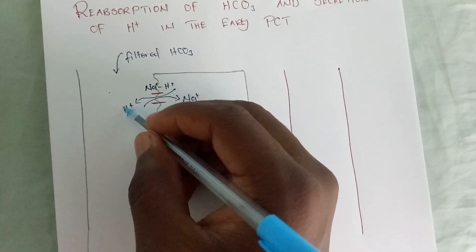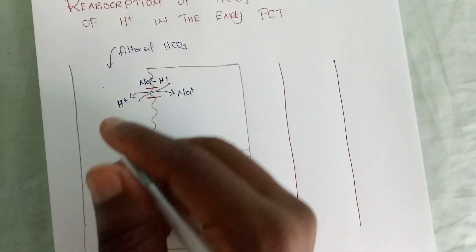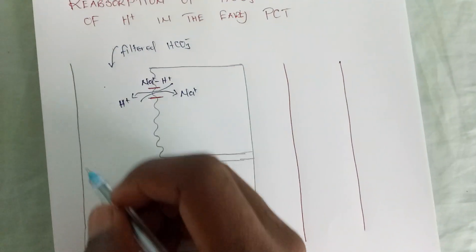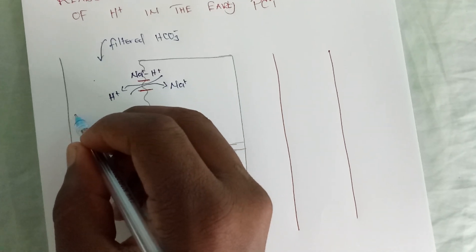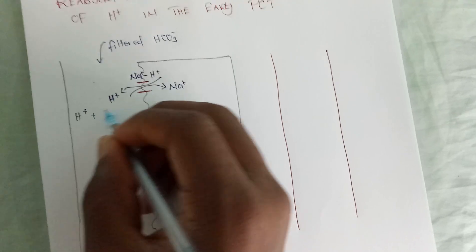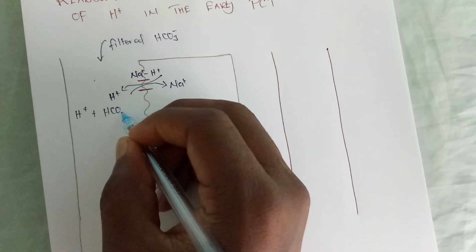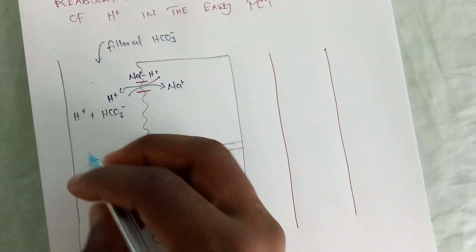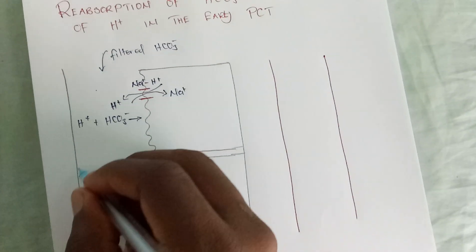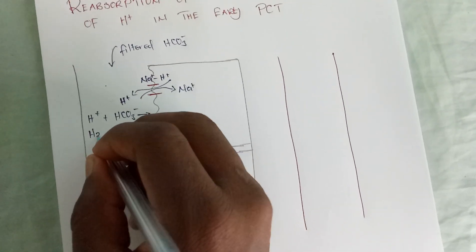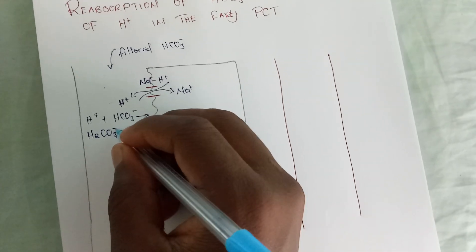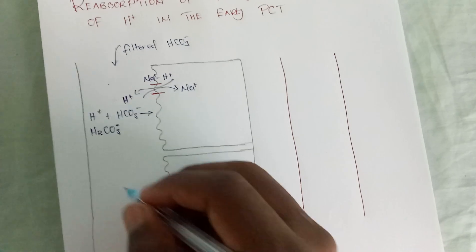Now, what is the function of this hydrogen in the lumen? Remember we have bicarbonate there. The reaction that will occur is: hydrogen ion plus bicarbonate reacts to form a weak carbonic acid.